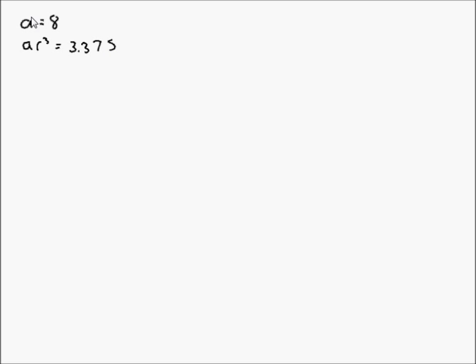We just do what we usually do. We have a cubed over a equals 3.375 divided by 8. This gives the answer of 0.421875. Cube root that answer and you get r equal to 0.75.